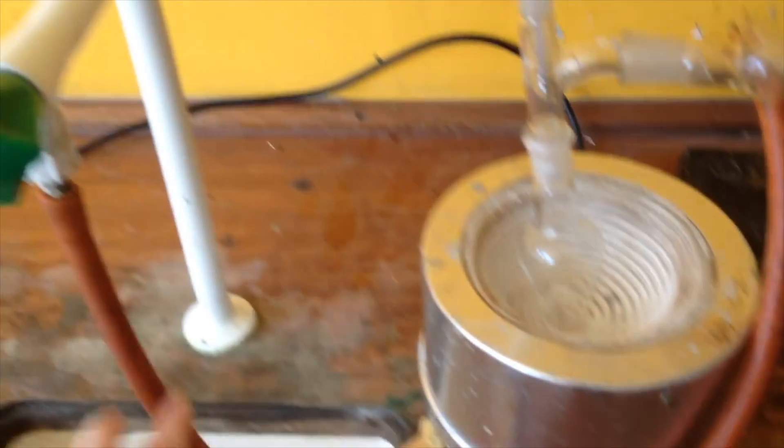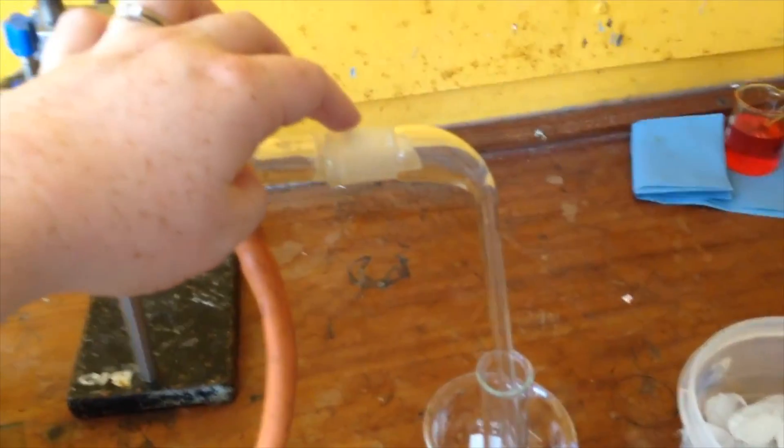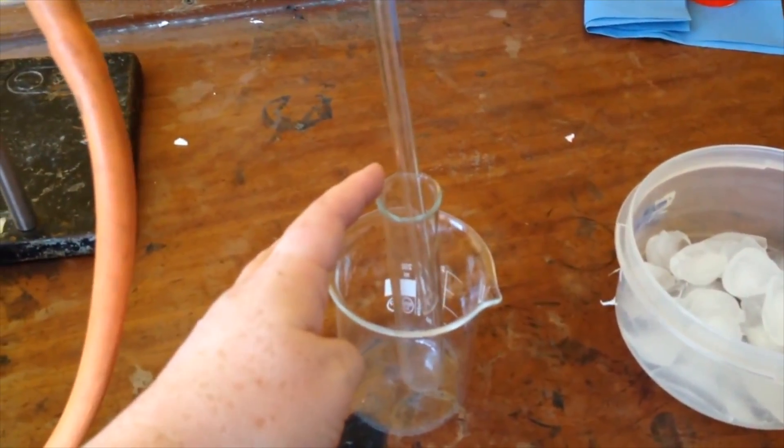This is the condenser. You need this end here attached to the tap and then the other end has to go into the rather dirty sink. Then this end here we have the delivery tube into our boiling tube which is going to be our water bath at the end.